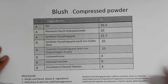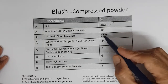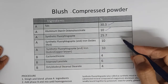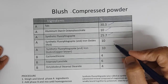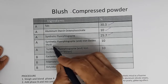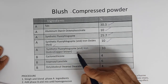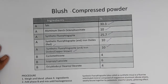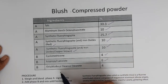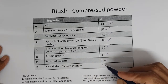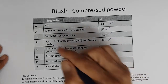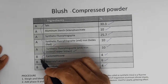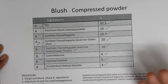For the compressed powder blusher: Talc, aluminium starch octanile succinate (modified starch) at 10%, synthetic fluorophlogophyte at 25.7%, synthetic fluorophlogophyte with iron oxide red at 10%, iron oxide copper brown with cyclomethicone and synthetic fluorophlogophyte at 10%, cyclomethicone 4%, isopropyl lanolate 6%, and octadecyl stearate 4%. Blend and spray these colors into pressed powders.